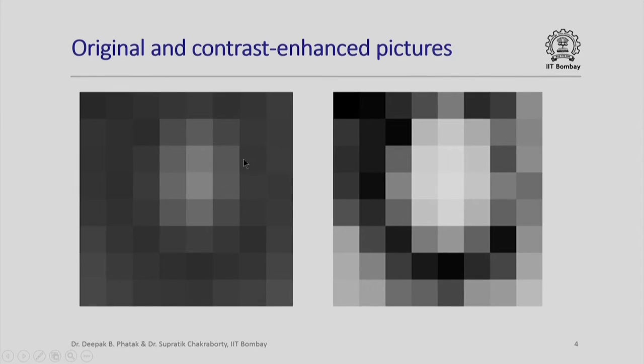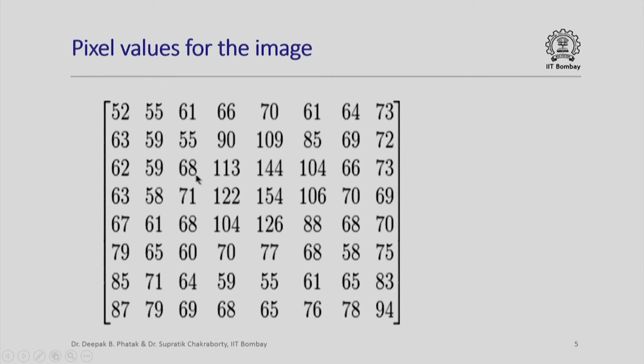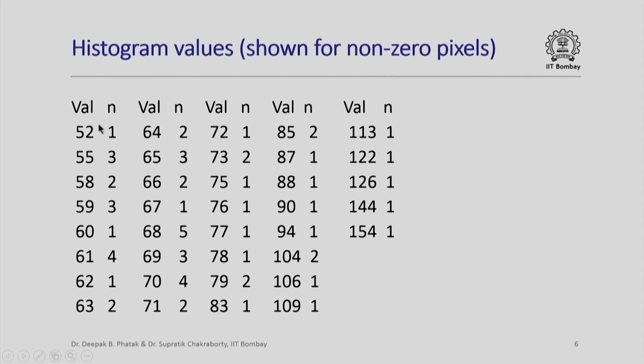We remember that we are doing this in the context of an artificial 8x8 image with this kind of pixel values. The original pixel values were these, using these we know that the histogram values will be of this kind. We had also seen the cumulative distribution function values and in fact the formulae was to be used for doing the contrast improvement.